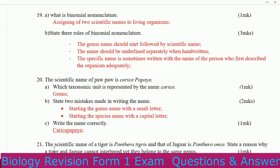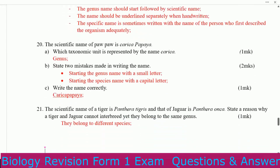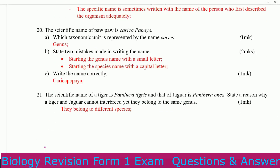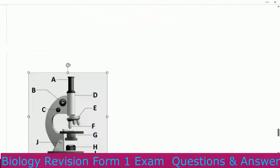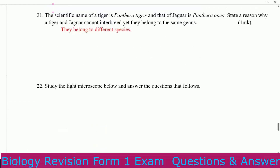The scientific name of pawpaw is Carica papaya. Which taxonomic unit is represented by the name Carica? That one is genus. State two mistakes made in writing the name. Mistake one: starting the genus name with a small letter. Mistake two: starting the species name with a capital letter. Write the name correctly: Carica papaya — that is how it is supposed to be written.